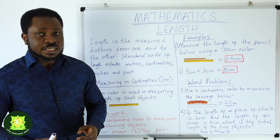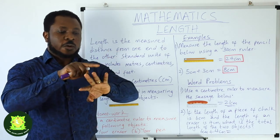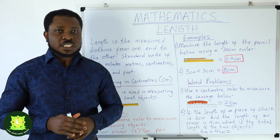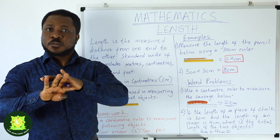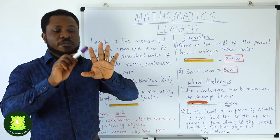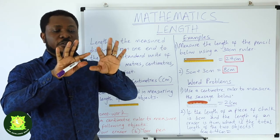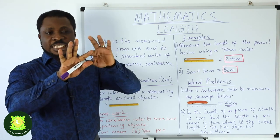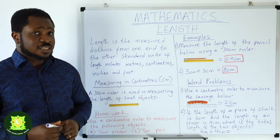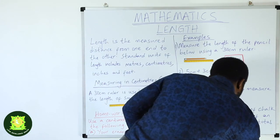What is 6 centimeters plus 4 centimeters? Let's count to 6: 1, 2, 3, 4, 5, 6 — that's 6 centimeters. Plus 4 centimeters: 1, 2, 3, 4. Counting all together: 1, 2, 3, 4, 5, 6, 7, 8, 9, 10. So 6 centimeters plus 4 centimeters equals 10 centimeters. If you got that, well done — 10 centimeters.